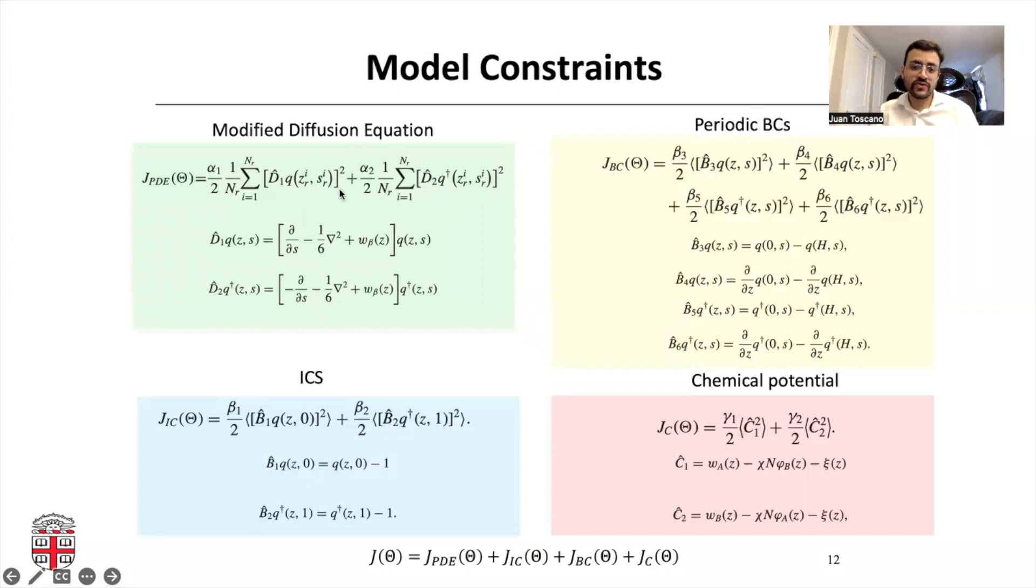These are the model constraints that we covered a few slides before. It's a modified diffusion equation that defines the self-consistent field theory. We'll also assume periodic boundary conditions. Remember that the domain is defined between negative H and H. Also some initial conditions and the chemical potential, all the equations we covered before.